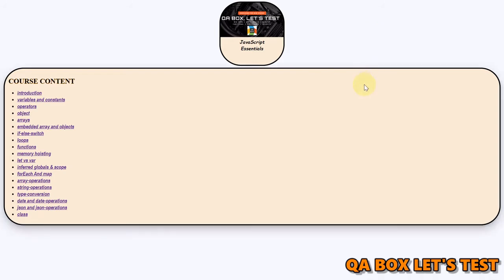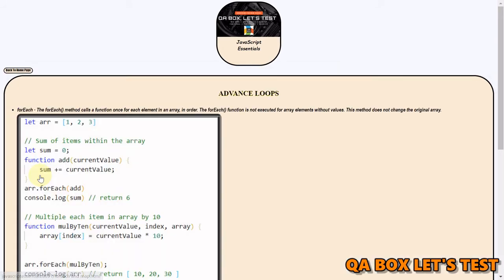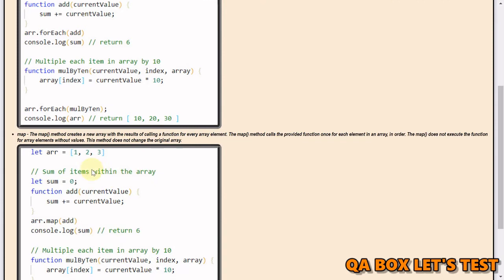In the for loop, while, and do-while videos we saw how to iterate through an array. Now let's understand forEach and map. The forEach method calls a function once for each element in an array, in order. It is not executed for array elements without values, and this method does not change the original array — that's the main thing about forEach.